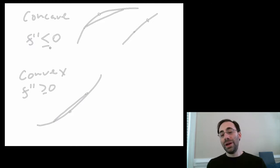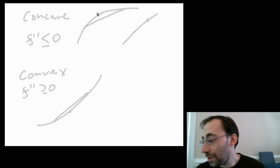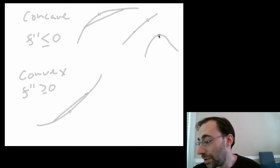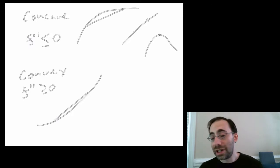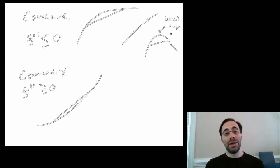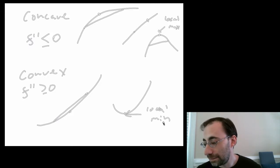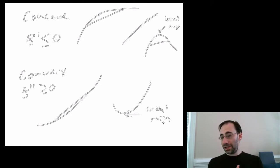The second reason we introduced it was because it came at the beginning of a section on optimization in one dimension. The connection is that if you find a critical point on a concave function — where the first derivative is zero — and if it's concave around that point, then this is going to be a local maximum. If it's locally convex around the critical point, you have a local minimum. That, in a nutshell, is why we used this in the previous part of the class.